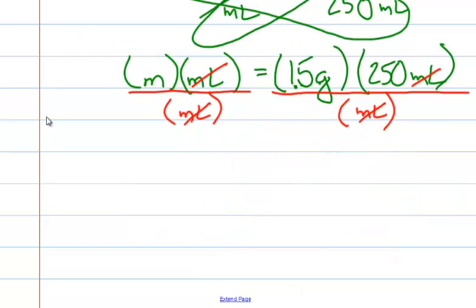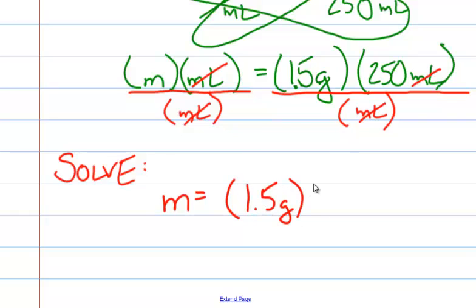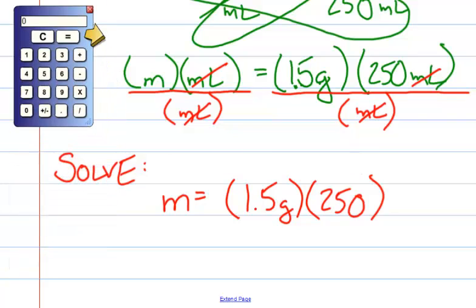So now, we're to the final step, which is to solve. We're left with mass is equal to 1.5 grams times 250. All the other units have been crossed out. We'll grab our calculator. 1.5 times 250 equals 375.